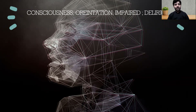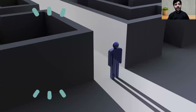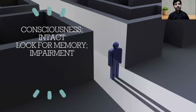If the patient is not oriented to time, place, and person, this could be a clue to the diagnosis of delirium. If the patient has intact consciousness — meaning they are oriented to time, place, and person — then we have to look for memory impairment.